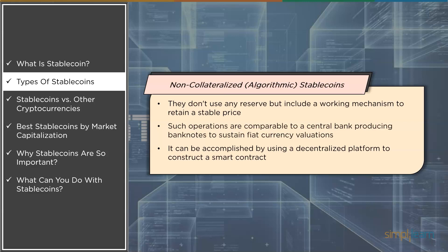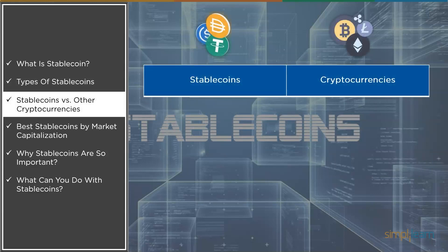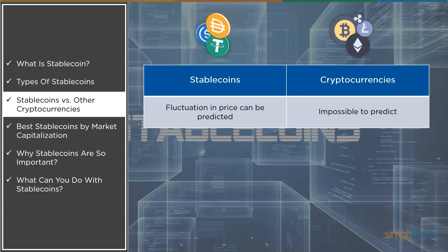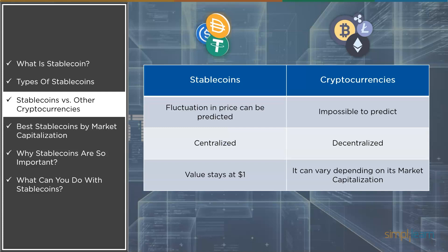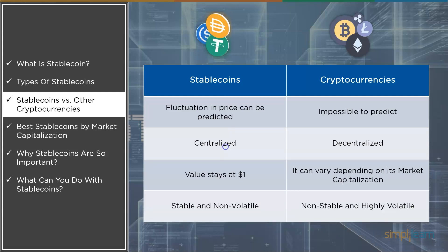Now let's have a quick comparison between stablecoin and other cryptocurrencies. First, it is possible to accurately predict fluctuations in the value of stablecoin, whereas it is difficult to anticipate trends in the value of other cryptocurrencies. Second, stablecoins are centralized as they are maintained by independent custodians, while cryptocurrencies are decentralized. Third, stablecoin's value remains constant at one dollar, while cryptocurrency has a price range depending on its market capitalization performance. Fourth, stablecoin prices remain constant making them non-volatile, whereas cryptocurrencies are extremely unpredictable and highly volatile.